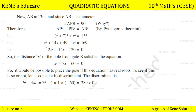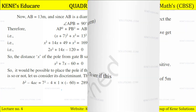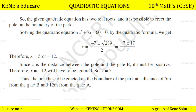Substituting the values: (x+7)² + x² = 13². Expanding, we get the quadratic equation 2x² + 14x − 120 = 0. Dividing everything by 2, we get x² + 7x − 60 = 0. To check if it is possible to place the pole, let us find the discriminant: b²−4ac = 7²− 4×1×(−60) = 49 + 240 = 289, which is greater than 0.